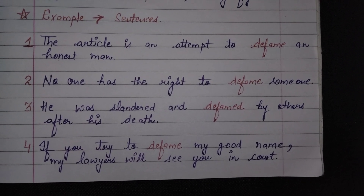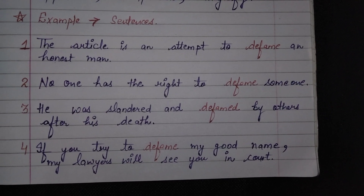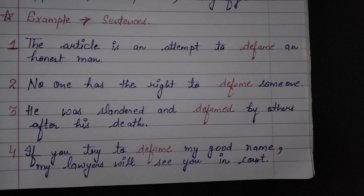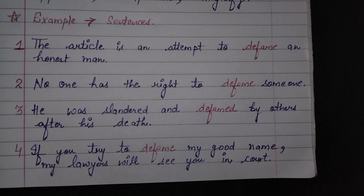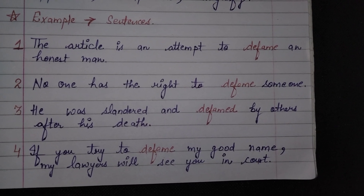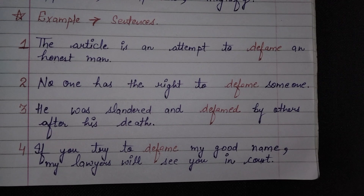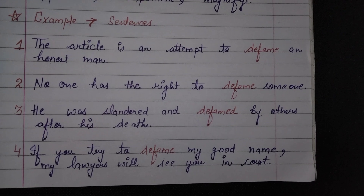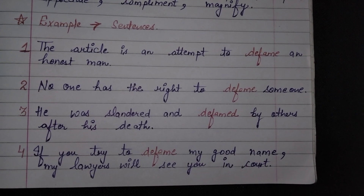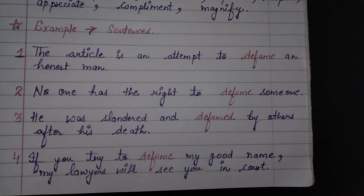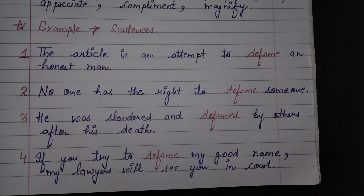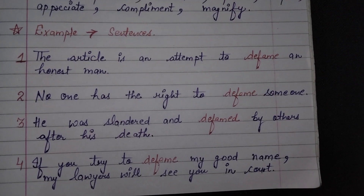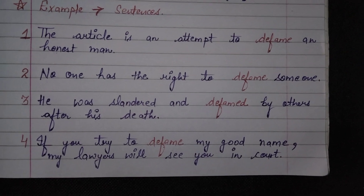Now we see the third sentence: he was slandered and defamed by others after his death. Yarni ki ek aadmi ki mirtiyo ke baad usko bhoat hi bhezat kiya gya. Uski ninda ki gai, chugli ki gai, uske baare mei bhoat galat baatye boli gai. Usko nuksaan pauchaya gya, defame kiya gya, slander kiya gya by others.